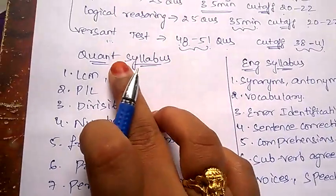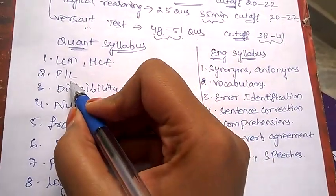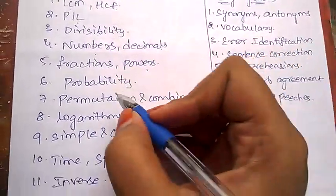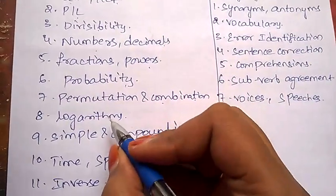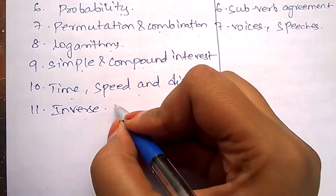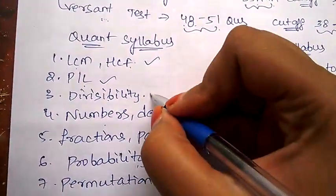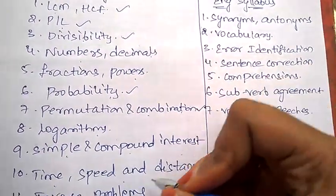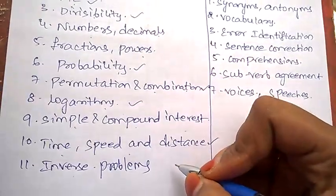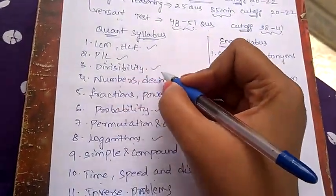Now let's see the quantitative aptitude syllabus. Under quantitative aptitude, they'll be asking problems on LCM, HCF, profit and loss, divisibility, numbers, decimals, fractions, problems on powers, probability, permutation and combination, logarithms, simple and compound interest. All these topics are very important and out of these, the topics which I have marked are more important.